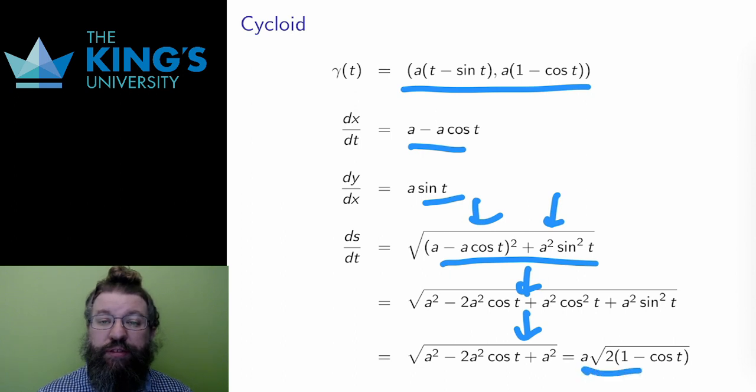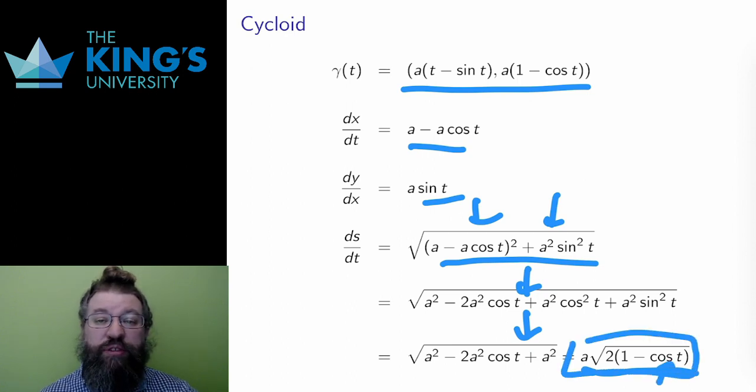One thing that is interesting about this speed is that at multiples of 2π, cosine is 1, and when this is true, the speed is 0. So, once every cycle, the speed is momentarily 0.